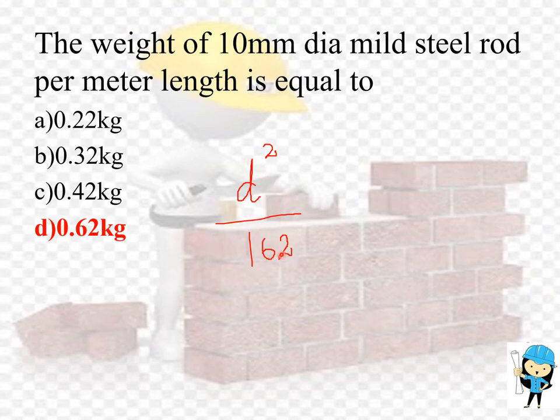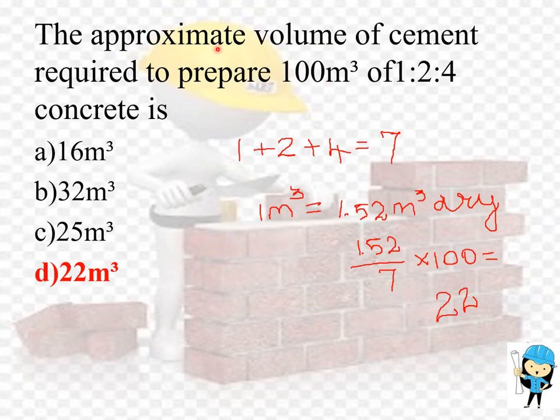The approximate volume of cement required to prepare 100 meter cube of 1:2:4 concrete is 22 meter cube. The solution is we should first add the ratios, that is 1 plus 2 plus 4 so we get 7. We know that 1 meter cube of wet concrete equals 1.52 meter cube of dry concrete. So 1.52 divided by 7, the sum of ratios, into 100, the total amount of concrete, gives us 22 meter cube. The cement ratio is 1, so 1 into 22 equals 22 meter cube.